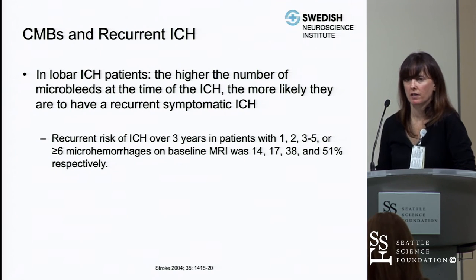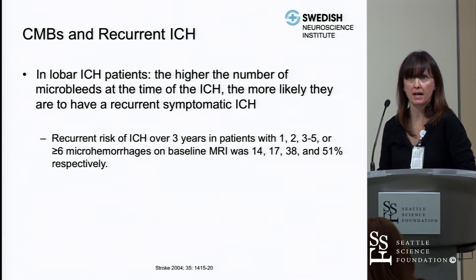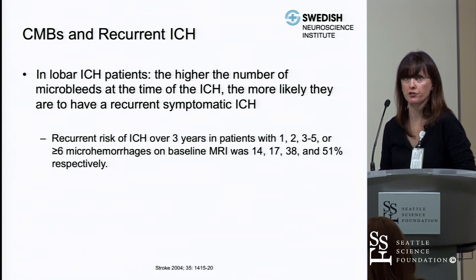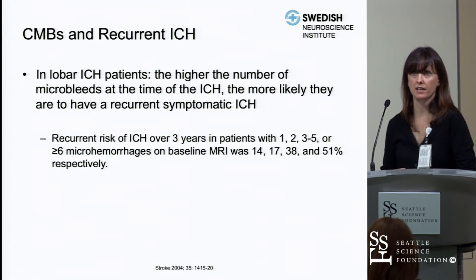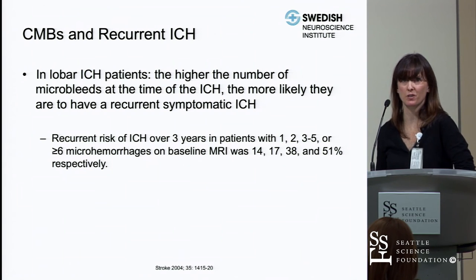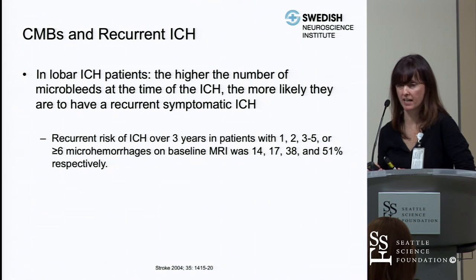In lobar intracranial hemorrhage patients, the higher the number of microbleeds at time of ICH, the more likely they are to have recurrent symptomatic intracranial hemorrhage. The recurrent ICH risk in patients with one, two to three, or six or more microhemorrhages on baseline MRI was 14%, 17-38%, and 51%, respectively. Patients with six or more microhemorrhages had about a 51% chance of recurrent symptomatic ICH.